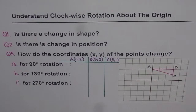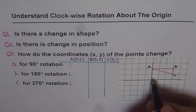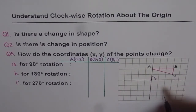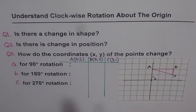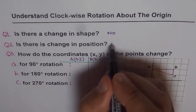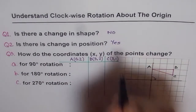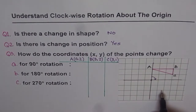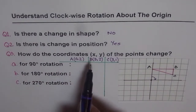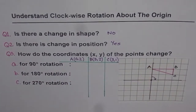Here are the answers. Question one: whenever you do a clockwise rotation about the origin — clockwise is this direction — the origin is the center point. Is there a change in shape? The answer is no, there is no change in shape. Is there a change in position? Yes. When you do a rotation, the figure gets a new position; we call that its image. Question three — how the coordinates change — you need to check with me now.